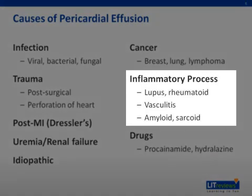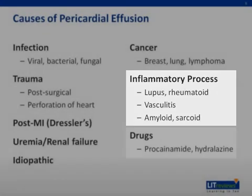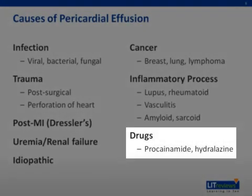Rheumatologic and inflammatory processes such as lupus, vasculitis, amyloidosis, and sarcoidosis can also result in a pericardial effusion. The presence of an effusion in the correct clinical scenario may help you diagnose some of these conditions. Certain drugs, such as procainamide and hydralazine, can also cause effusions.